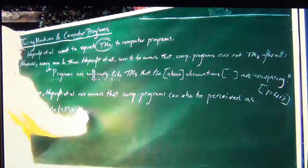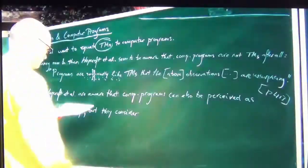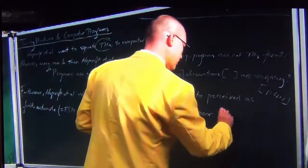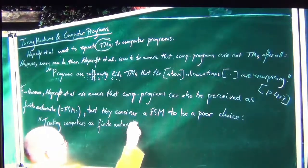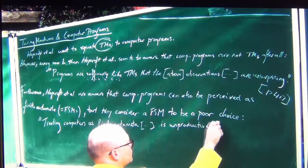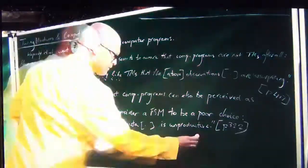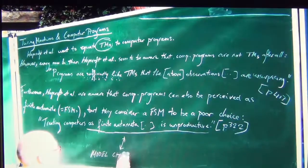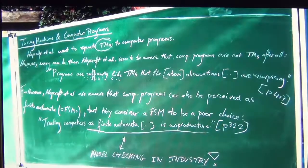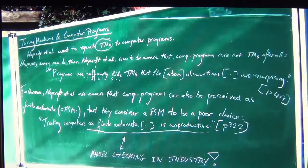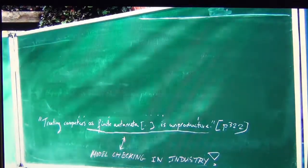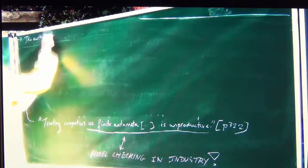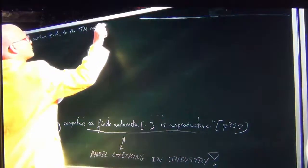Furthermore, Hopcroft et al. are aware that computer programs can also be perceived as finite automata — finite state machines — which is a good thing. But unfortunately, they consider a finite state machine to be a poor choice by default, writing: 'treating computers as finite automata is unproductive.' This is plain wrong. If you look at model checking in industry today, by far the most-used technique in both software and hardware industries, model checking is precisely based on finite automata — on finite abstractions of real computing technology, not on infinite abstractions or the Turing machine type of abstractions.